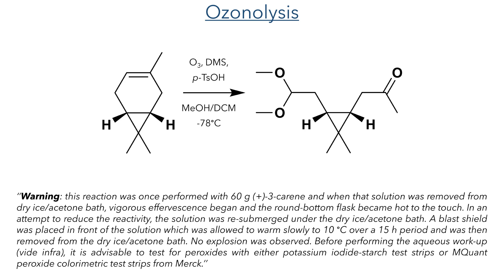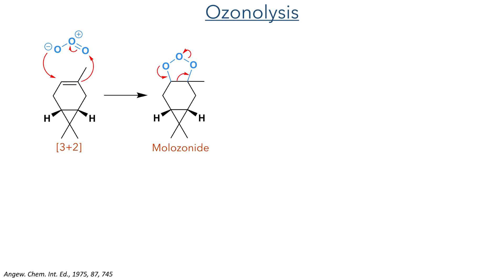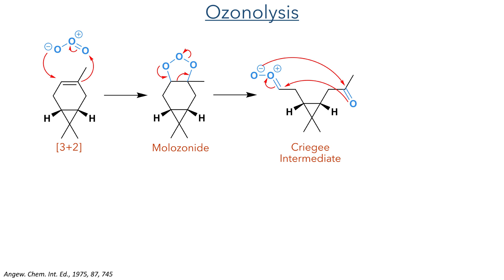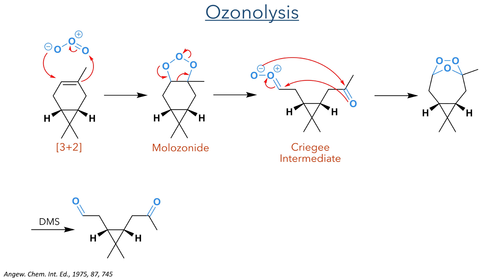So let's dive into the forward synthesis. The first reaction was an ozonolysis using ozone, dimethyl sulfide, and p-toluenesulfonic acid. This reaction can be quite exothermic and the authors included a warning that their reaction became hot and effervescent, and that they had to take precautions to cool it down and reduce reactivity to prevent it from running away. The reaction begins with a 3+2 cycloaddition between the alkene and the ozone molecule, which generates a malozonide intermediate that rearranges to form the Criegee intermediate, which then recyclizes to form an ozonide. Reductive quenching with DMS generates two carbonyls: an aldehyde and a ketone.